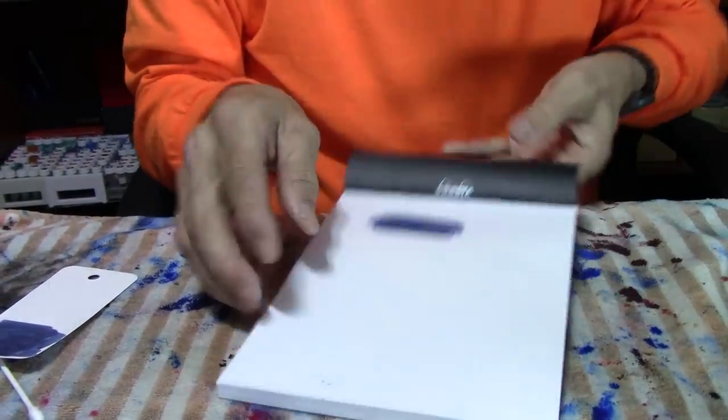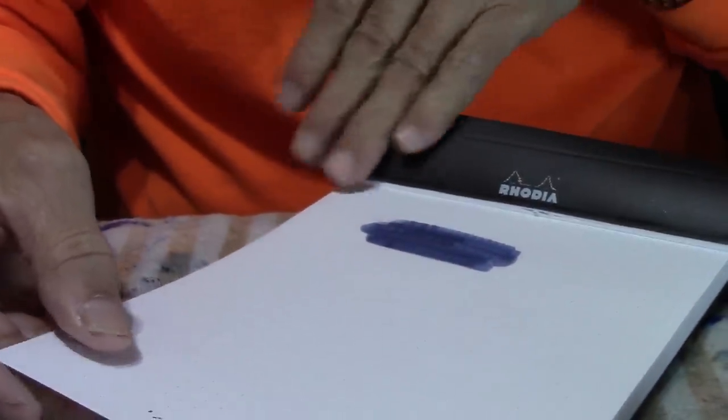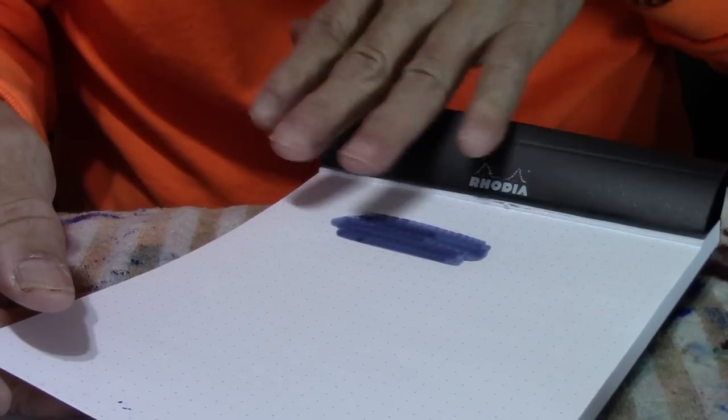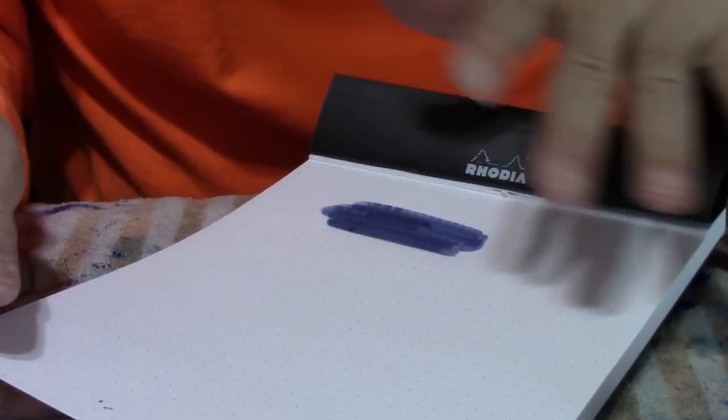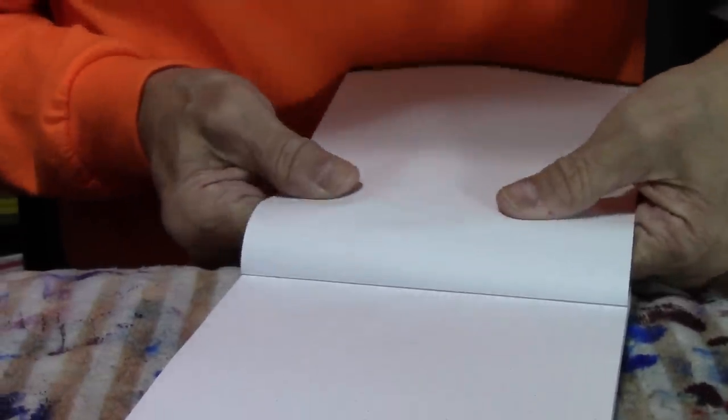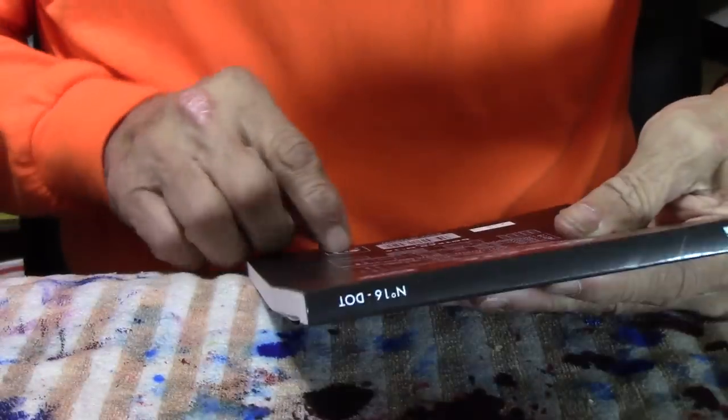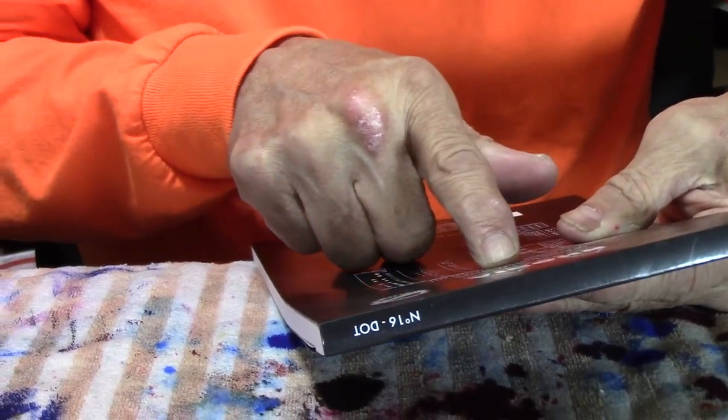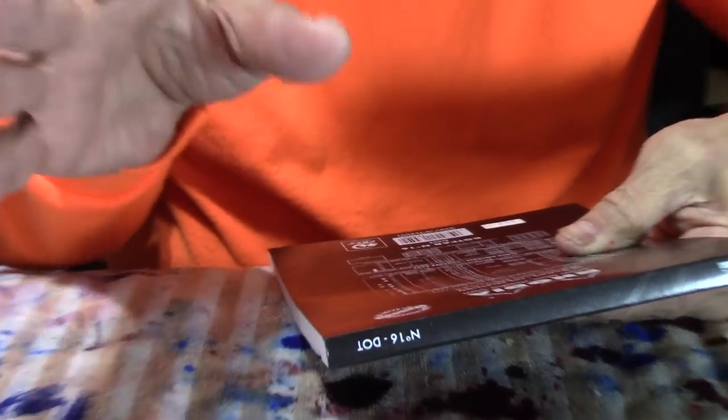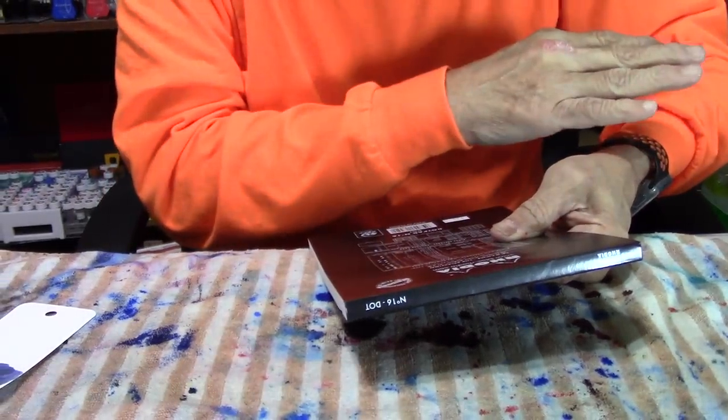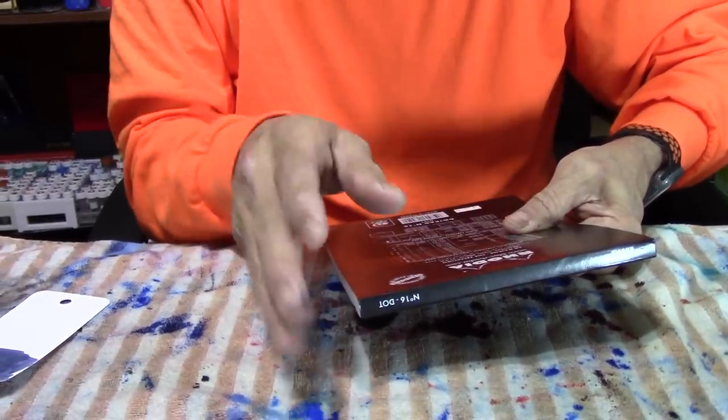Set that aside. And on the Rhodia dot grid paper, this is what it looks like. It looks really nice on the paper as well. And really no show through, but then the paper is 80 GSM, you know. So, 52 GSM is really thin compared to the 80 GSM.